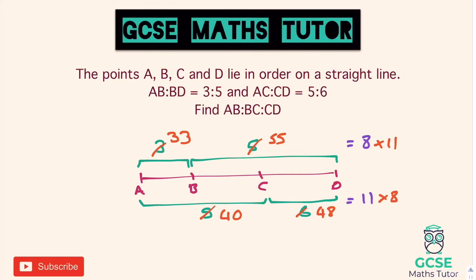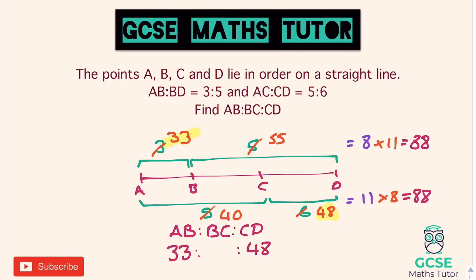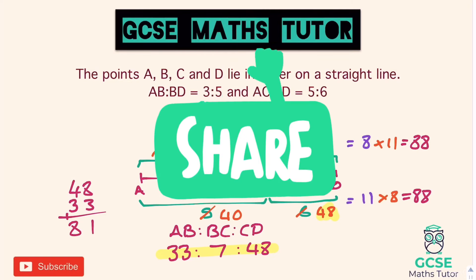Both ratios now total 88. From the diagram: A to B is 33, C to D is 48. We need B to C. Adding 33 and 48 gives 81, and 88 minus 81 equals 7. So the three-part ratio A to B : B to C : C to D is 33 to 7 to 48. That's something a little different — using totals rather than a crossover to combine ratios. Hopefully it was helpful — please like, comment, subscribe and I'll see you for the next one.